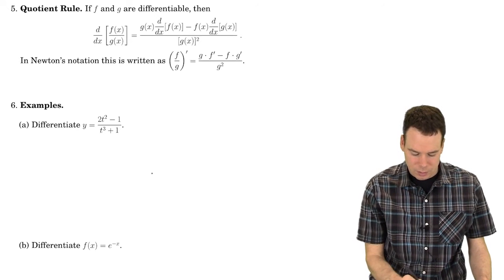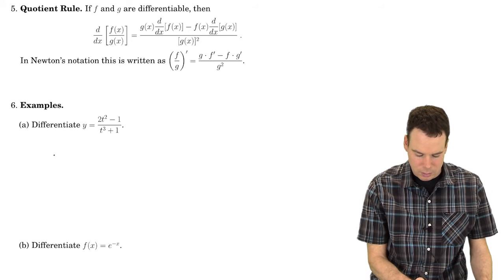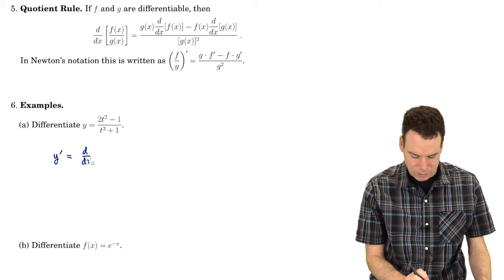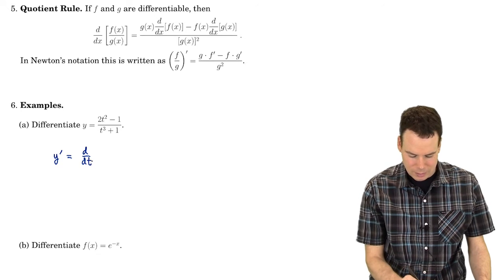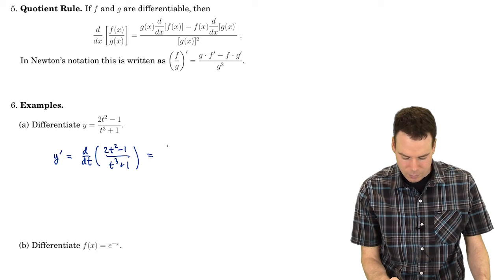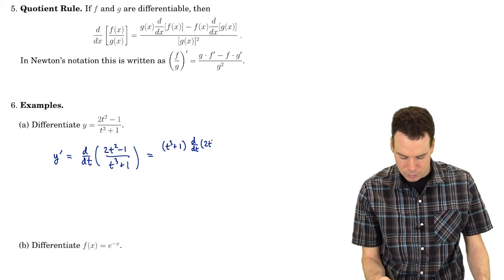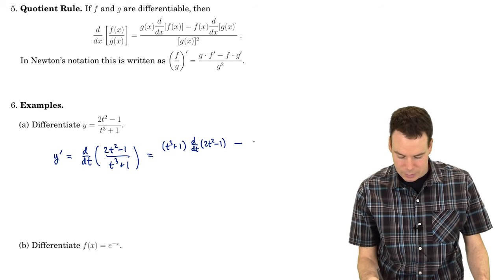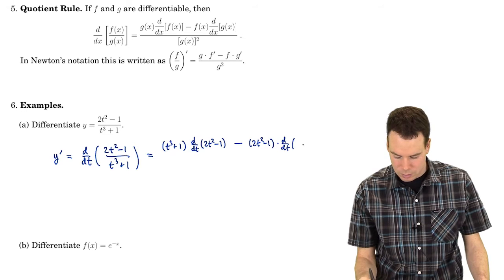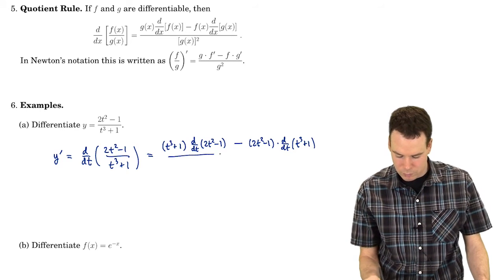So let's have a look at some examples. Differentiate (2t² - 1) over (t³ + 1). The derivative with respect to t of (2t² - 1) all over (t³ + 1). So it's the derivative of the top times the bottom function — the bottom function is untouched and we're multiplying by the derivative of the top — minus the top function times the derivative of the bottom function, all over the bottom function squared.